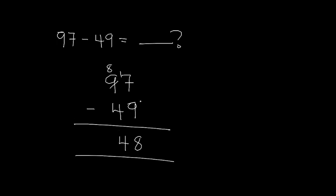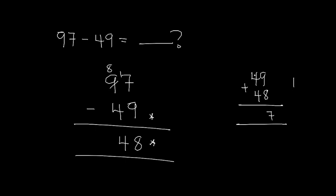Let's verify: to check we add 49 and 48 to see if we get 97. 9 plus 8 gives 17 — write down 7, carry 1. That 1 plus 4 gives 5, and 5 plus 4 gives 9. That equals 97, the same as our original number. Thank you so much for watching. This is how we do simple subtraction of two-digit numbers. I'll see you in the next video, bye bye.